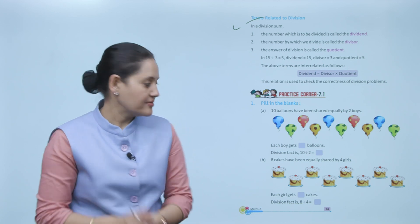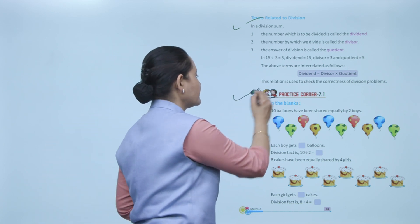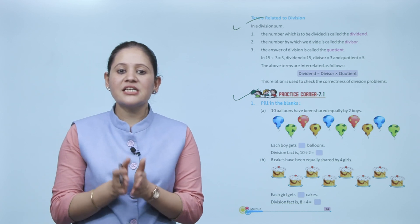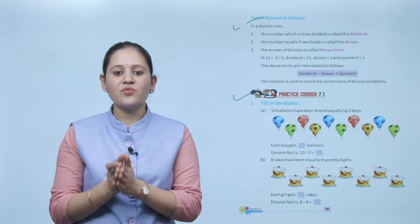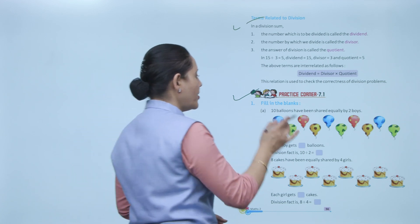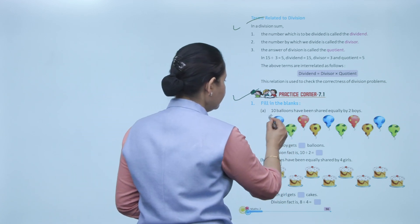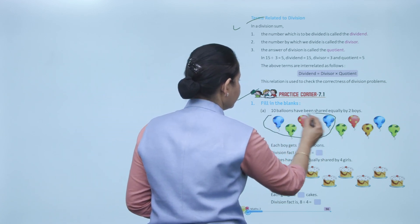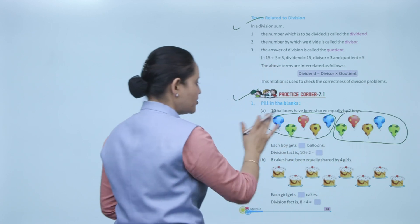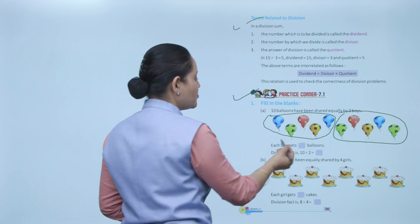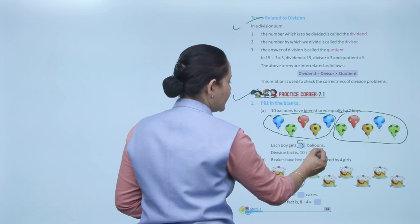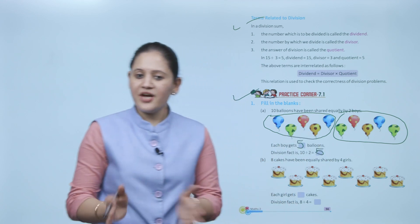Practice corner 7.1 — fill in the blanks: 10 balloons shared equally by two boys. Two groups of 5, so each boy gets 5 balloons. Therefore 10 divided by 2 equals 5.